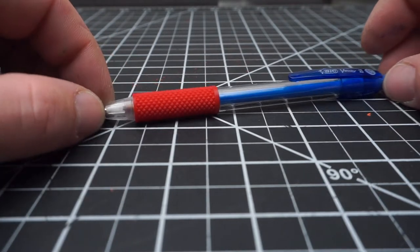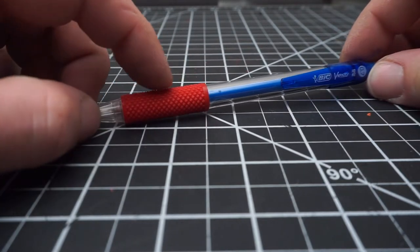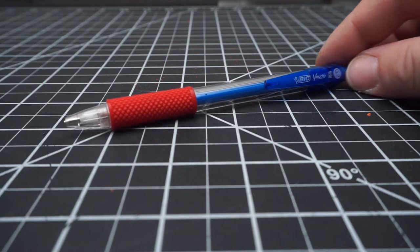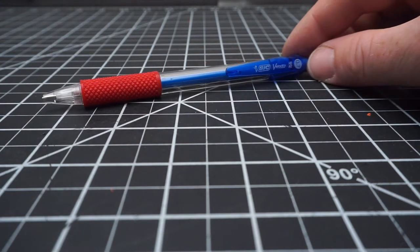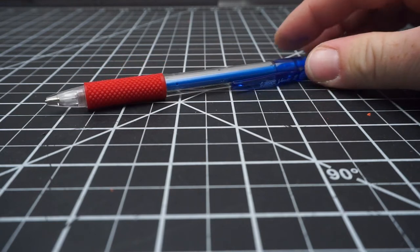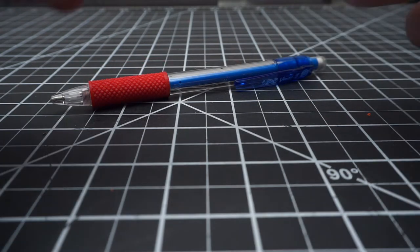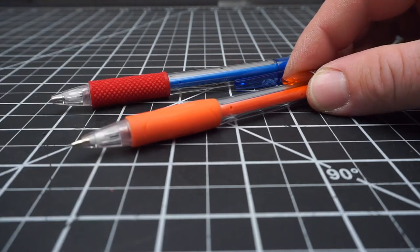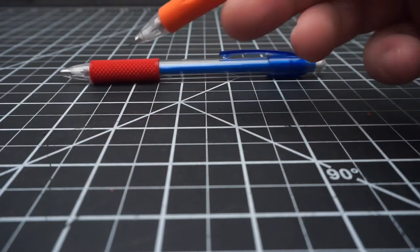Last time on Cowabunga Pencil Time I showed you this knurled grip that I made for the Bic Velocity Mechanical Pencil. It made it a favorite pencil of mine, or maybe not the favorite, but a good pencil from this pencil with a rubber grip that I found unusable and gross.